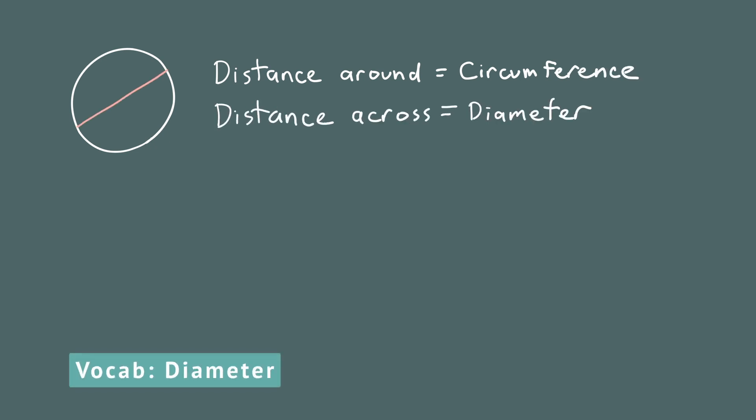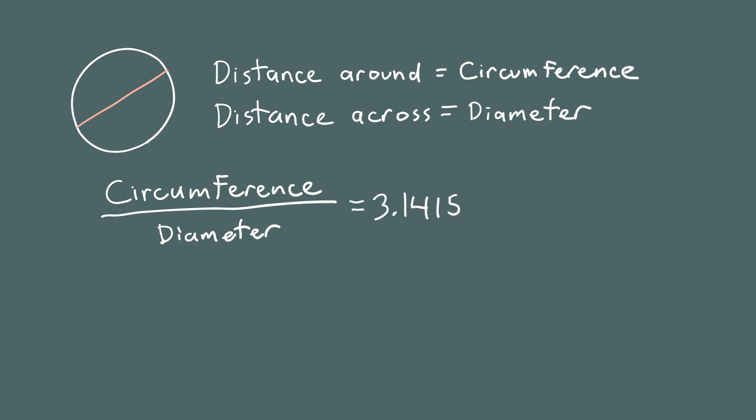Let's see another example and another way that letters are used in algebra. Suppose we have a circle. The distance around a circle is called the circumference. And the distance across the circle is called the diameter. Now for any circle, no matter how big or how small, if you take the circumference and divide it by the diameter, you always get the same number, 3.14159. The number does continue, but this is a very good approximation.